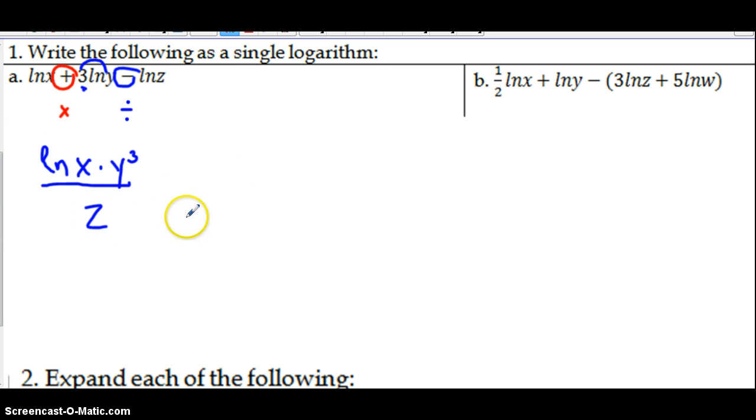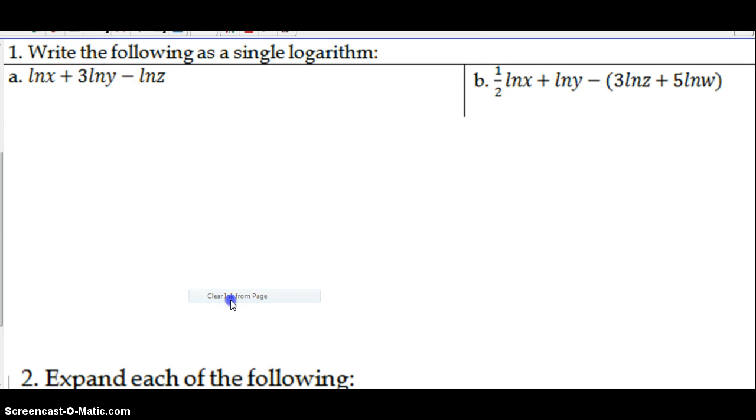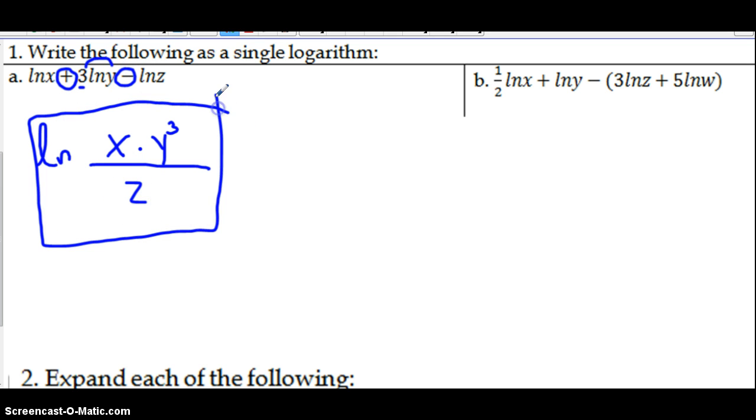You see, I'm just rewriting this as a single logarithm. You just need one ln now. Hold on, let me get rid of this. Remember, just one more time. It's just the ln—you just need one of them now. It's going to be x times y³. I just put this three up here, divided by z because I have a minus. That is your whole answer. Nothing really crazy about this.